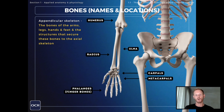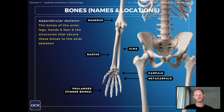Moving down to the elbow joint, the humerus articulates with two bones in the forearm: the radius, which is the one that sits in line with the thumb, and the ulna. At the wrist joint the radius and the ulna articulate with the carpals, which are a group of short bones at the top of the hand. The carpals are connected to the metacarpals in the middle, and the metacarpals are connected to the phalanges or finger bones.